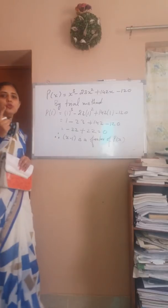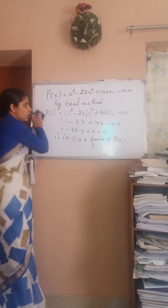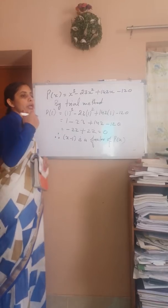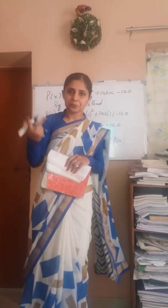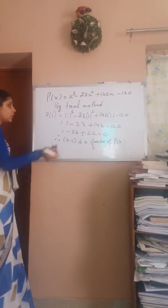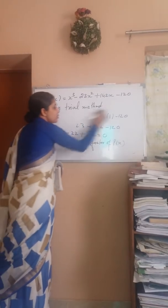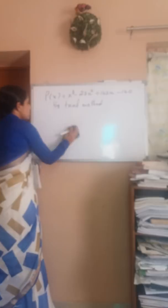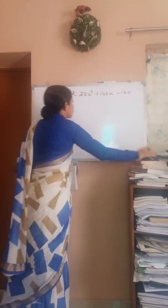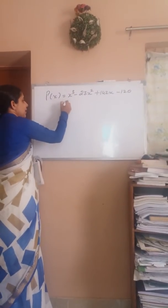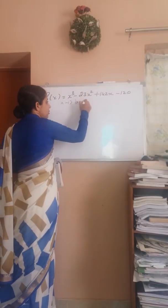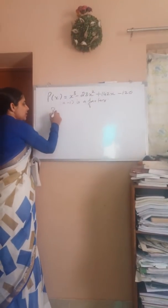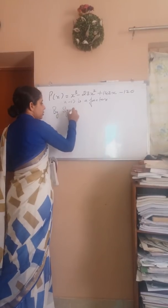Now we have found the first factor. Since it is a cubic polynomial, we need to find two more factors. There are two methods to find the other two factors — one is by synthetic division. We've seen that (x - 1) is one factor, and now by synthetic division we'll find out the other factors.